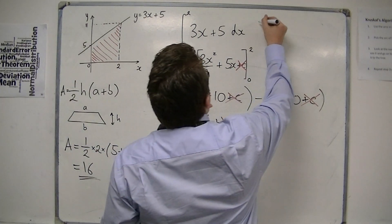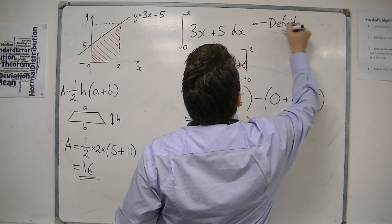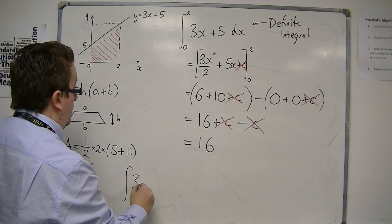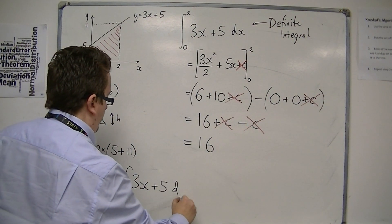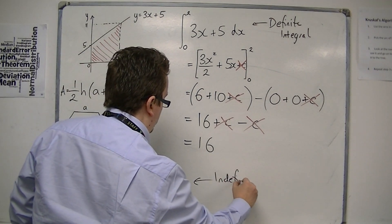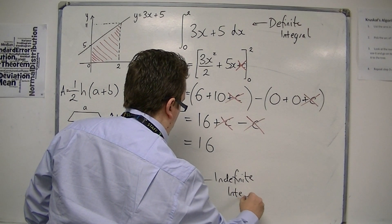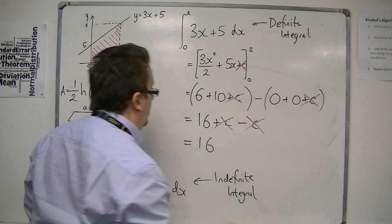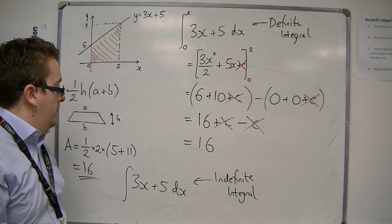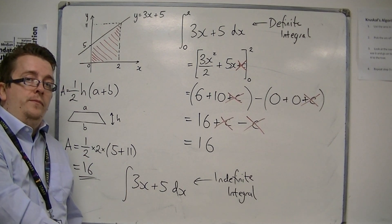So this is a definite integral, rather than this, which is an indefinite integral. The key difference is that the definite integral has limits for the integration, but the indefinite integral has no limits.